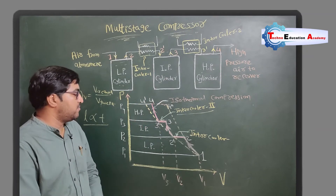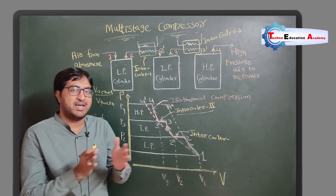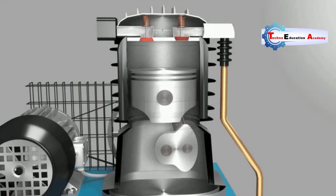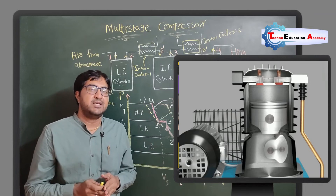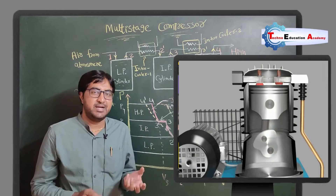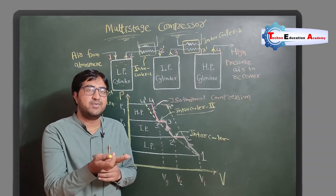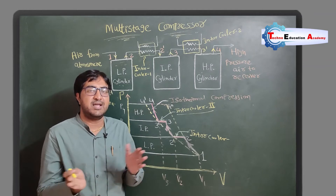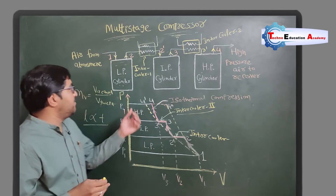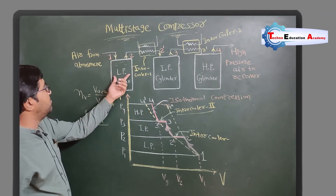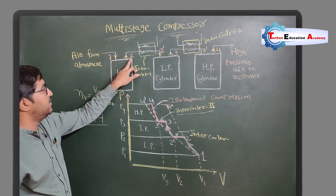We will first discuss the schematic diagram and then represent all the processes on a PV diagram. The air enters into the low pressure cylinder, which works the same as a single acting reciprocating compressor. When the piston travels from TDC to BDC, a negative pressure is generated in the cylinder and it sucks air from the atmosphere. When the piston travels from BDC to TDC, the air is compressed and delivered. Similarly in the low pressure cylinder, air from the atmosphere enters and is compressed to point two.